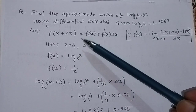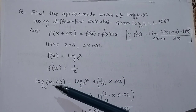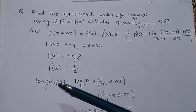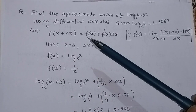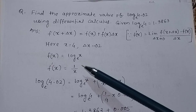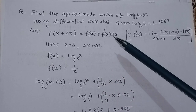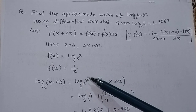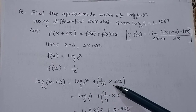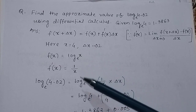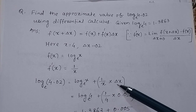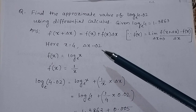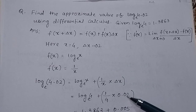Now using this formula, we find the approximate value of log 4.02 to the base E: f(x + Δx) = log_e(x) + f'(x)·Δx = log_e(x) + (1/x)·Δx. With x = 4 and Δx = 0.02, this becomes log 4 to the base E + (1/4)·0.02.